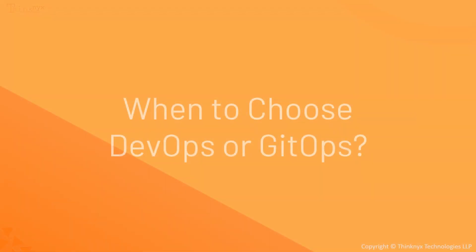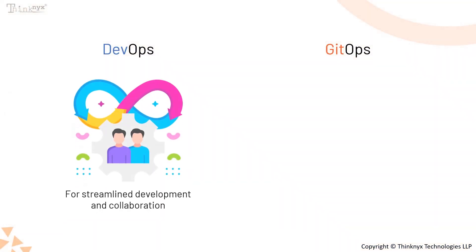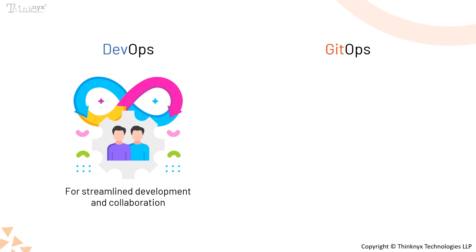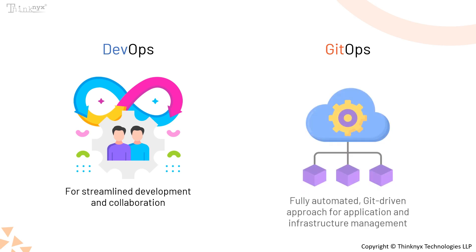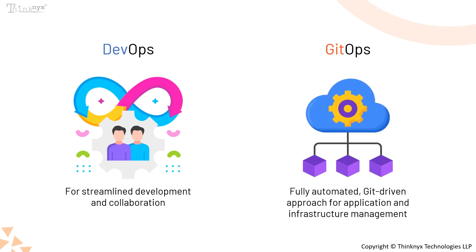Both approaches are powerful, but which one should you choose? If your goal is to streamline the development and operations processes while fostering collaboration, DevOps is the way to go. But if you are working with Kubernetes and want a fully automated, Git-driven approach to manage your applications and infrastructure, then GitOps is an excellent choice. It provides version control, rollback capabilities, and continuous deployment.